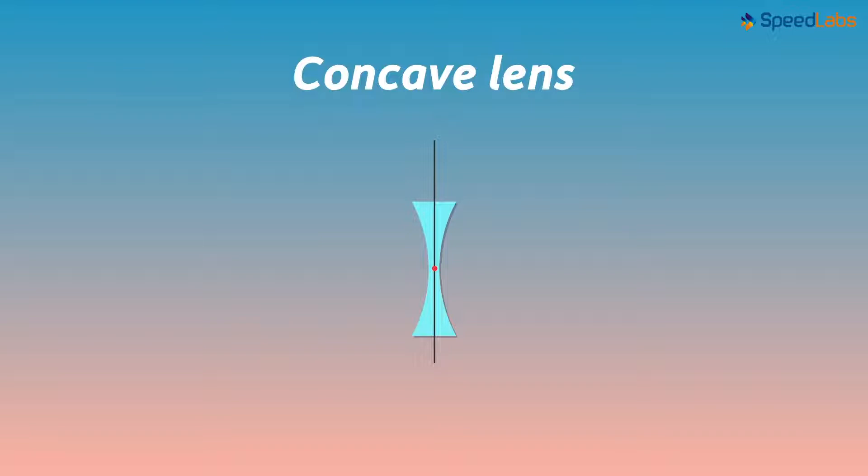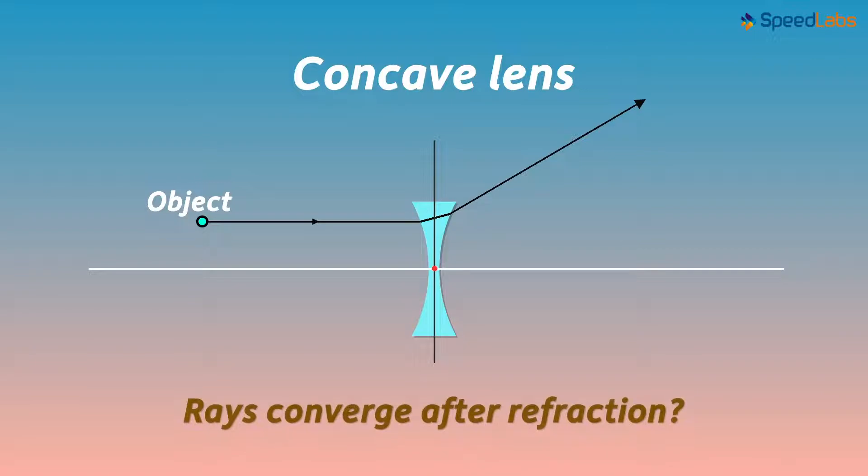It refracts the light in a similar way. A ray of light after entering the concave lens bends towards the normal, and when it again enters air, it bends away from the normal. Will the concave lens behave in the same way as the convex lens? Will the rays converge after refracting from a concave lens?